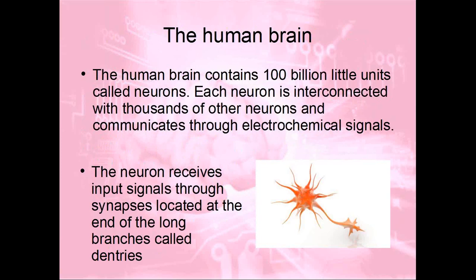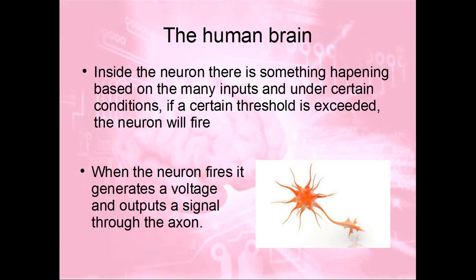Let's talk about the human brain. The human brain has a hundred billion little units called neurons, and every neuron is interconnected with thousands of other neurons. The neuron inputs signals through what are called, in medical terms, synapses, connected with long branches called dendrites. What happens is there are many inputs, and under certain conditions the neuron will fire a signal that potentially becomes input to other neurons, fired through the axon.